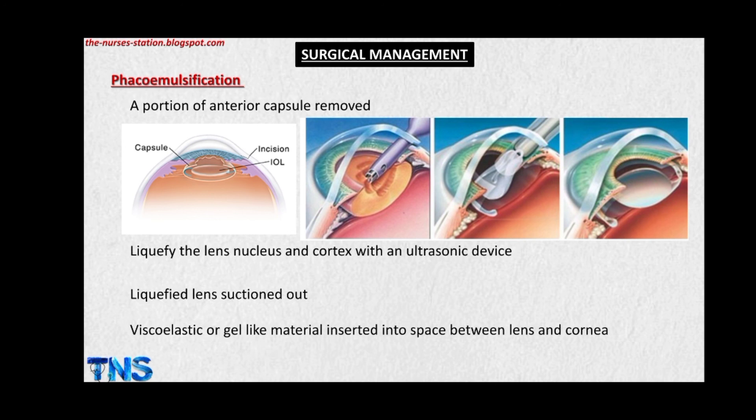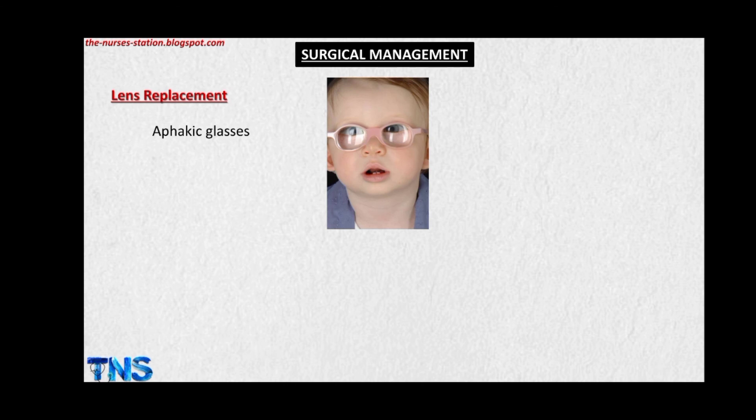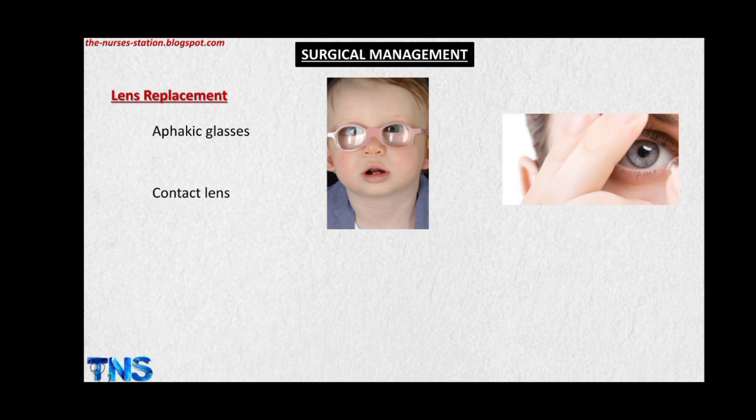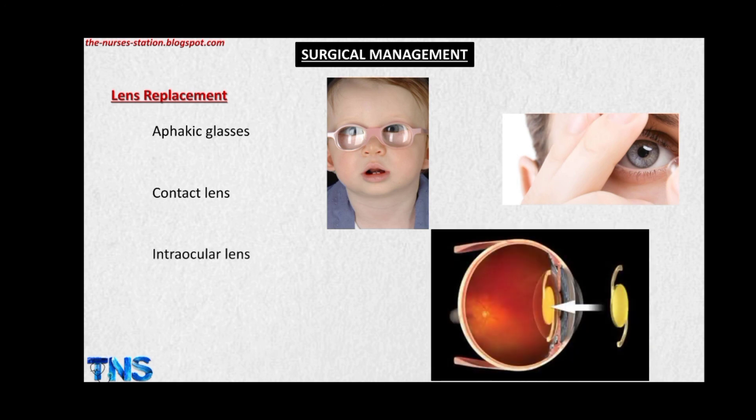After phacoemulsification, when the patient has no lens — either artificial or natural — the patient is termed aphakic. There are three options for lens replacement: first, using an aphakic lens, which causes 25% magnification and improves vision; second, using a contact lens, which makes vision almost normal but is not preferred for patients who have difficulty inserting, removing, or cleaning them; and third, using an intraocular lens, where an artificial lens is inserted into the eye in place of the natural lens.